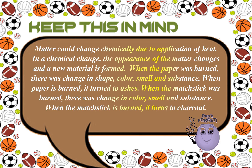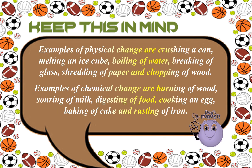Matter could also change chemically due to application of heat. In a chemical change, the appearance of matter changes and a new material is formed. When paper is burned, there is a change in shape, color, smell, and substance — it turns to ashes. When a matchstick is burned, there is a change in color, smell, and substance — it turns to charcoal.